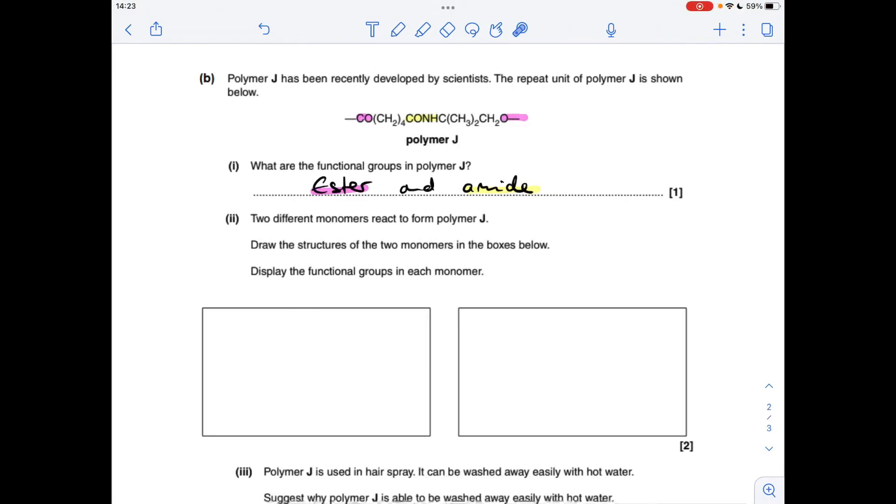Part B now—the functional groups in polymer J. Well, they've been a bit awkward here by splitting the ester group across at either end of the molecule. Anyway, that's an ester group and that's an amide group.